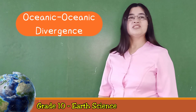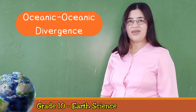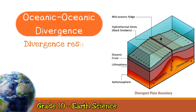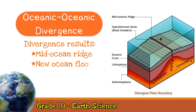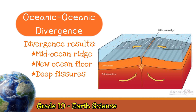What about when divergence occurs in the oceanic lithosphere? In this case, the rising convection current below lifts the lithosphere, producing a mid-ocean ridge. As the plates separate, new material from the mantle oozes up to fill the gap. This material slowly cools to produce new ocean floor. Also, extensional forces stretch the lithosphere and produce deep fissures.